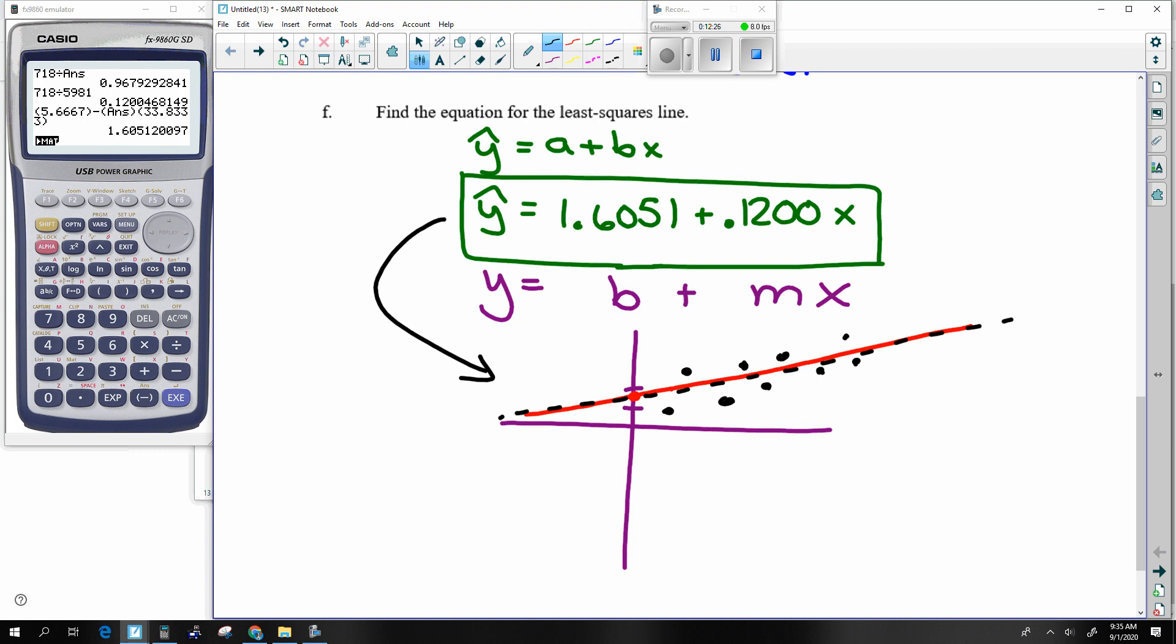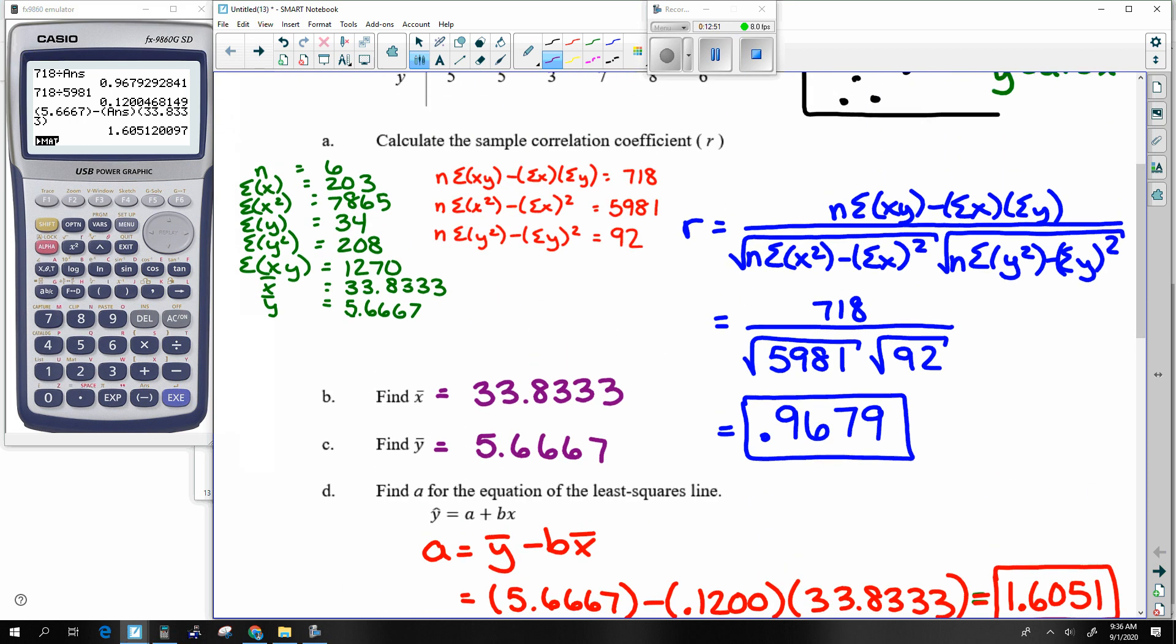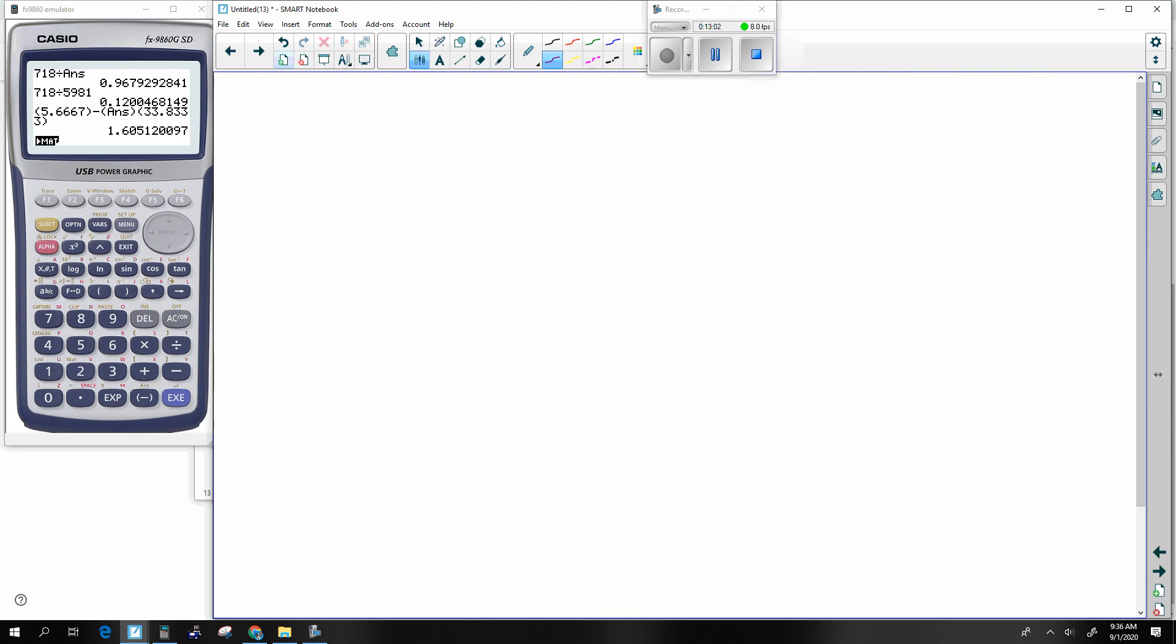But even though it's mathematically perfect, does that imply that all the dots are actually on the line? Right? No. All the dots are not on the line. It's a prediction. It's the best prediction. But still, how good of a prediction is this? And that's where this first question comes into play. This correlation coefficient, R.